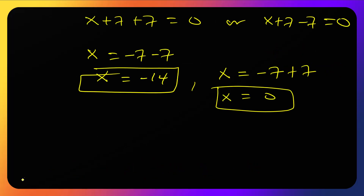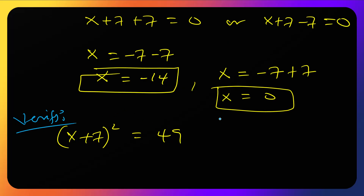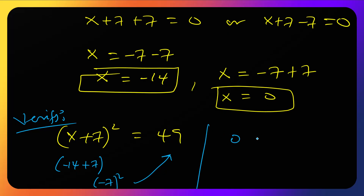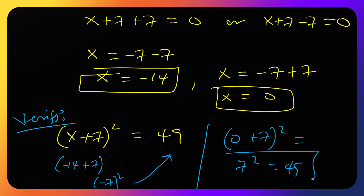Let's verify. For x = -14: (-14 + 7) squared = (-7) squared = 49. True. For x = 0: (0 + 7) squared = 7 squared = 49. True. So the correct answers are x = -14 and x = 0.